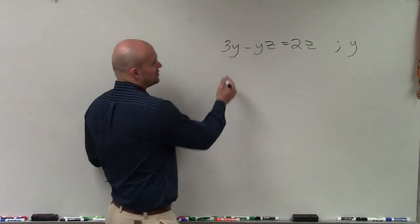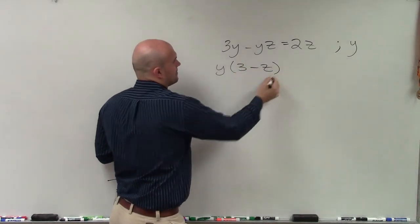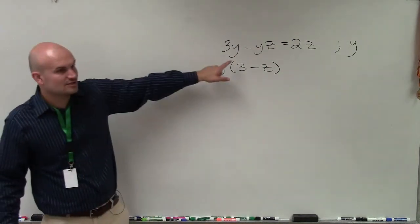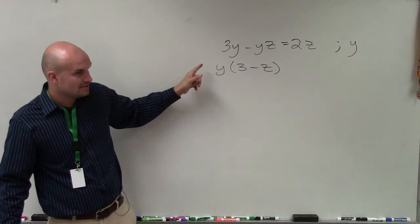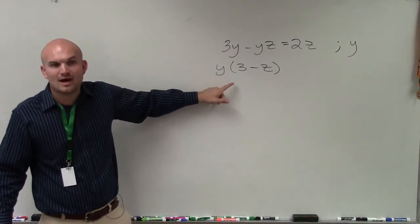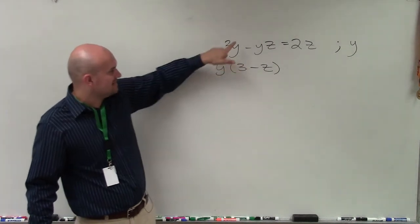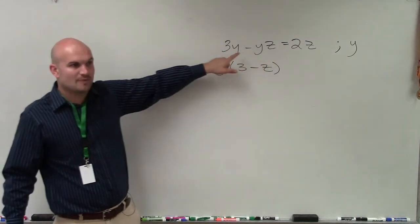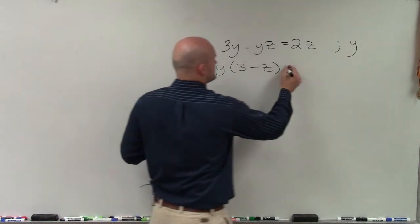But what we can do is factor out the y. So essentially, what I'm doing is dividing out the y in both terms and rewriting it as a product. Because if you apply distributive property, does y times 3 minus z give you this when you apply distributive property? Yeah. So it's like the reverse of distributive property, what I'm doing, equals 2z.